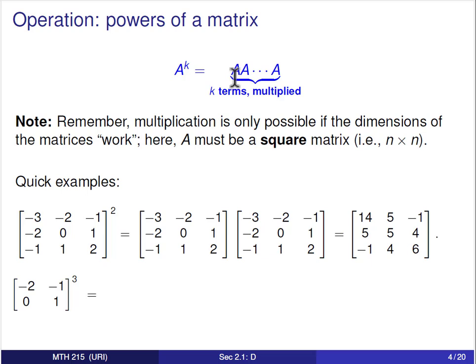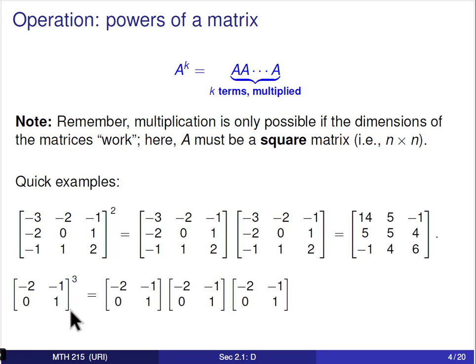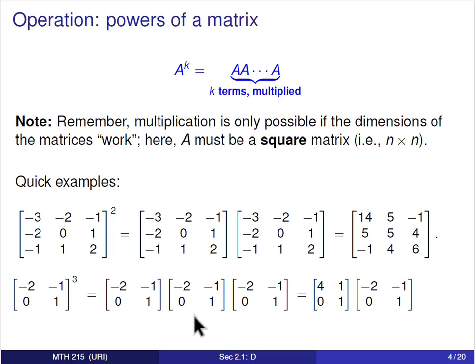Squaring a matrix does mean taking two copies and multiplying them together. Cubing a matrix means taking three copies and multiplying them. Because matrix multiplication is associative, we can group them however we like. Multiplying the first two gives us the matrix with entries 4, 1, 0, 1, and multiplying that result by the third matrix gives us negative 8, negative 3, 0, 1.